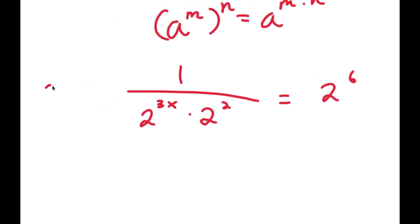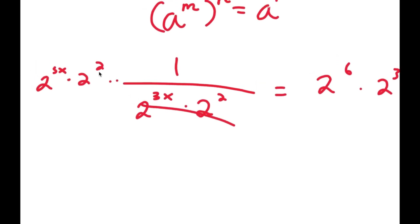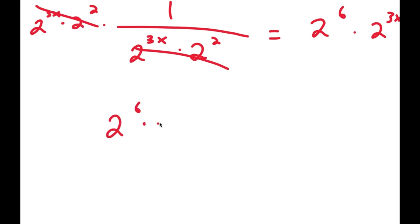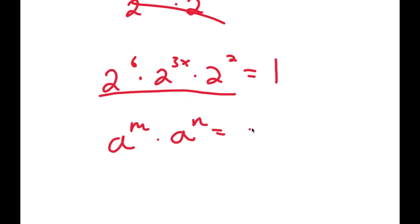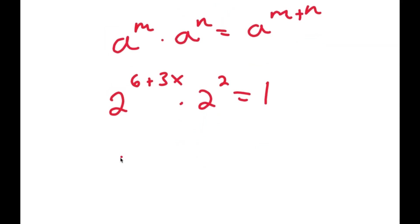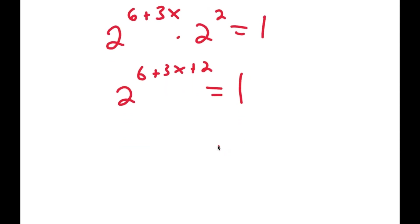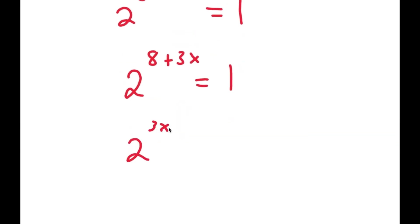Now I can multiply both sides accordingly, and these terms cancel out, leaving me with 2 to the power of 6 times 2 to the power of 3x times 2 squared is equal to 1. Because all these powers have the same base, and a^m times a^n equals a^(m+n), I get 2 to the power of 6 plus 3x, and multiplying by 2 squared gives 2 to the power of 6 plus 3x plus 2 equals 1. Since 6 plus 2 is 8, I get 2 to the power of 8 plus 3x is equal to 1, which I can write as 2 to the power of 3x plus 8 equals 1.